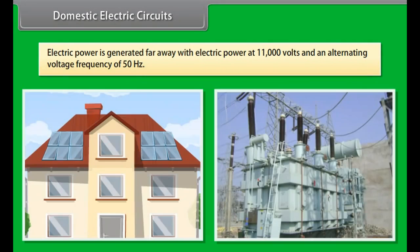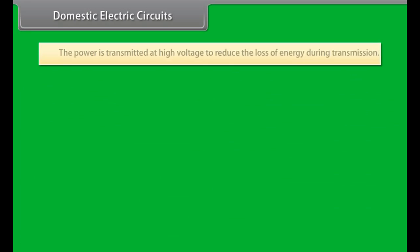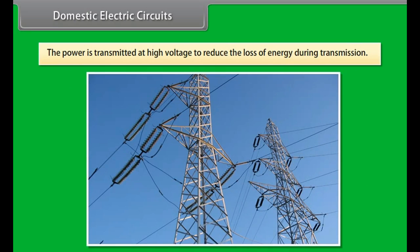Domestic electric circuits. Electric power is generated far away from the places it is consumed. At the generating station, the electric power is generated at 11,000 volts with an alternating voltage frequency of 50 hertz. The power is transmitted to the places of consumption at high voltage to reduce the loss of energy during transmission.